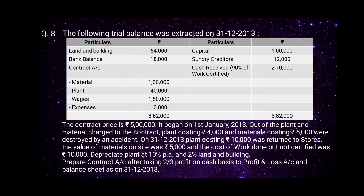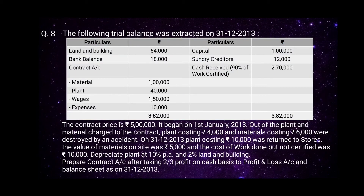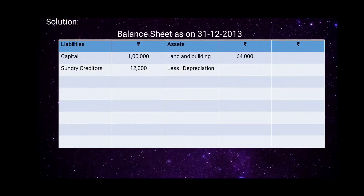On the assets side: land and building is rupees 64,000. Depreciation at 2 percent on land and building is rupees 1,280. So the net amount of land and building is rupees 62,720.